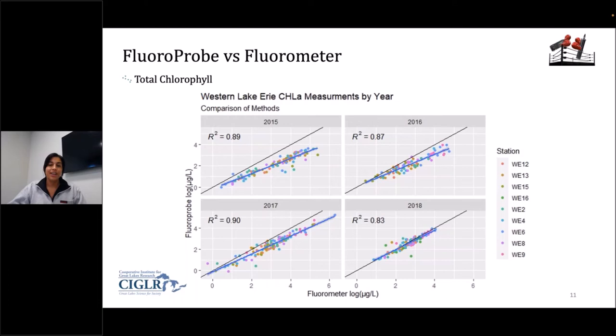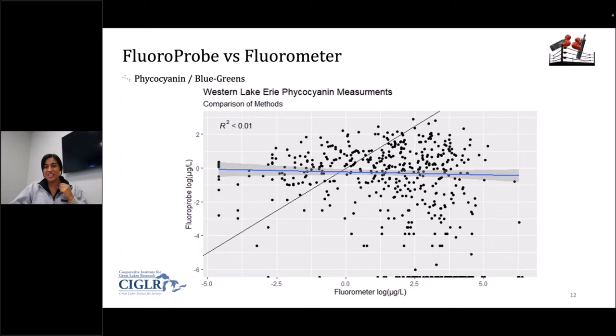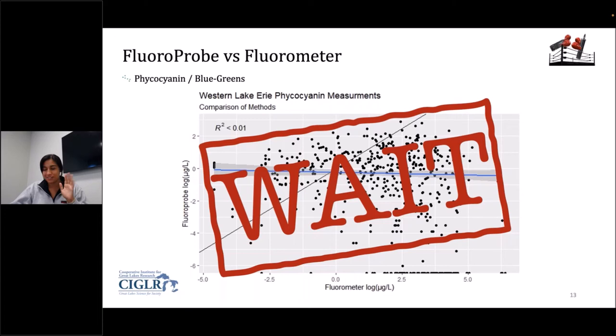Now to phycocyanin, which is a proxy for cyanobacteria and toxins in the water. As you can see, the blue line is almost horizontal — there's not really a good indication of a relationship between these two methods, and the R-squared is not very good either. The fluoroprobe does not compare well to the traditional methods for phycocyanin. But that's okay because it means we have work to do later.